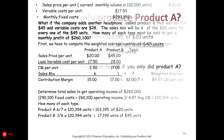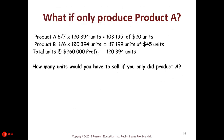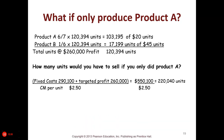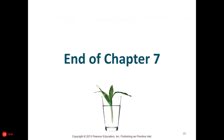If you were only doing Product A, you'd have to sell a lot more units. The reason is that the variable costs are higher on Product A — the lower the variable costs, the less you have to sell. That concludes Chapter 7.